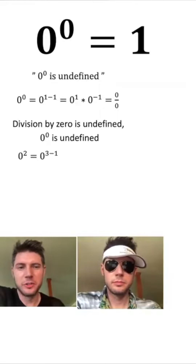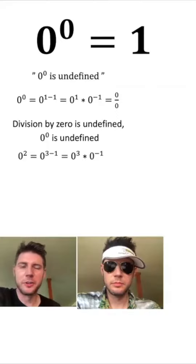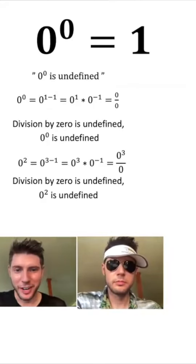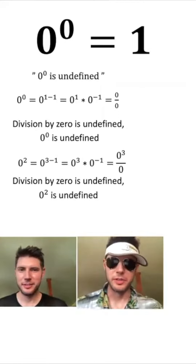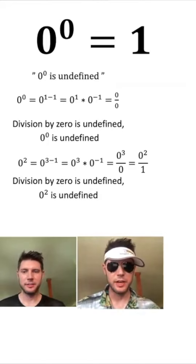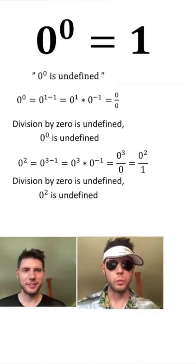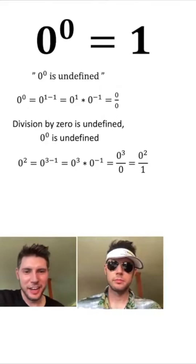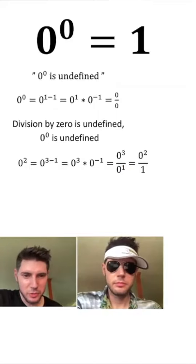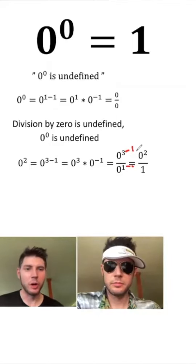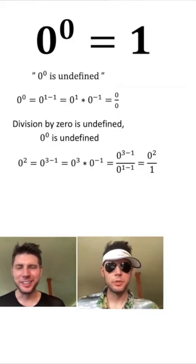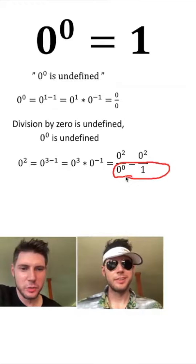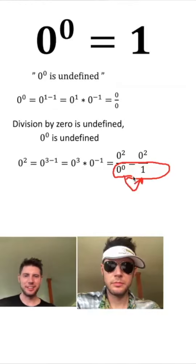If we have 0 squared, that would equal 0 to the power of (3 minus 1), which would equal 0 cubed over 0. But division by 0 is undefined — so does that mean 0 squared is undefined? That's a clever argument, but not correct, because these 0s would cancel: 0 cubed over 0 to the first gives 0 squared over 1. So your original statement was incorrect. You made 0 on the bottom a 0 to the 1, then subtracted 1 from each — reducing both top and bottom by one term of 0. So 3 minus 1 is 2, and 1 minus 1 is 0. You arrived at your conclusion without realizing you were saying 0 to the 0 equals 1.